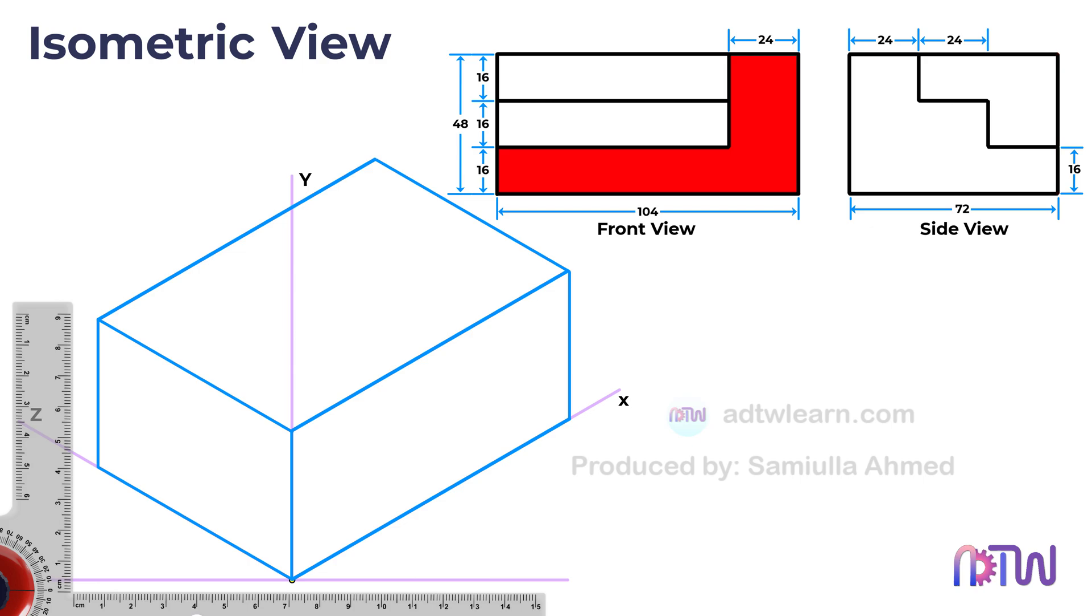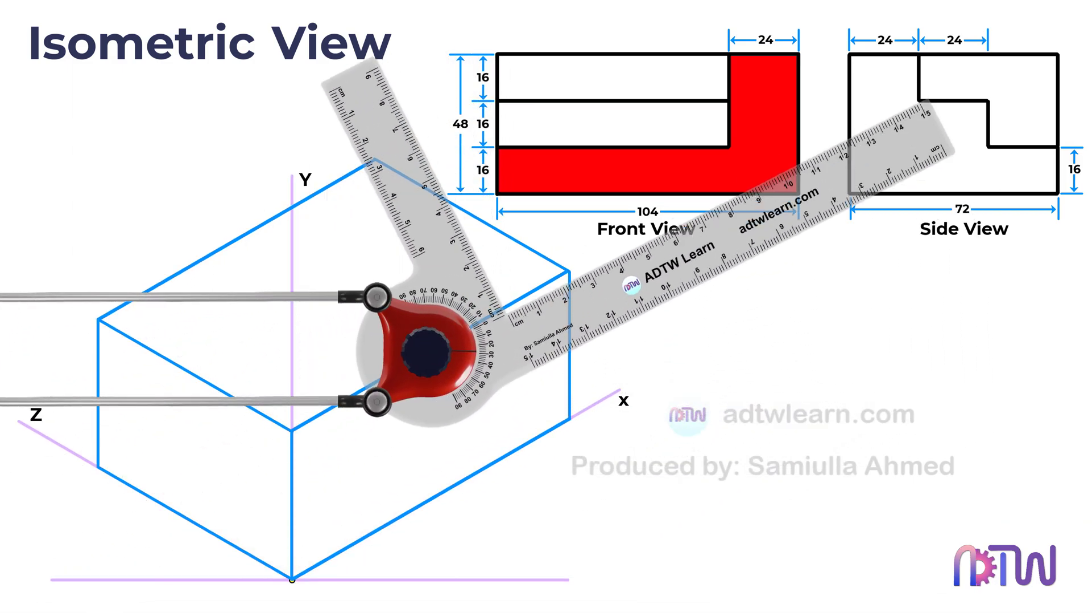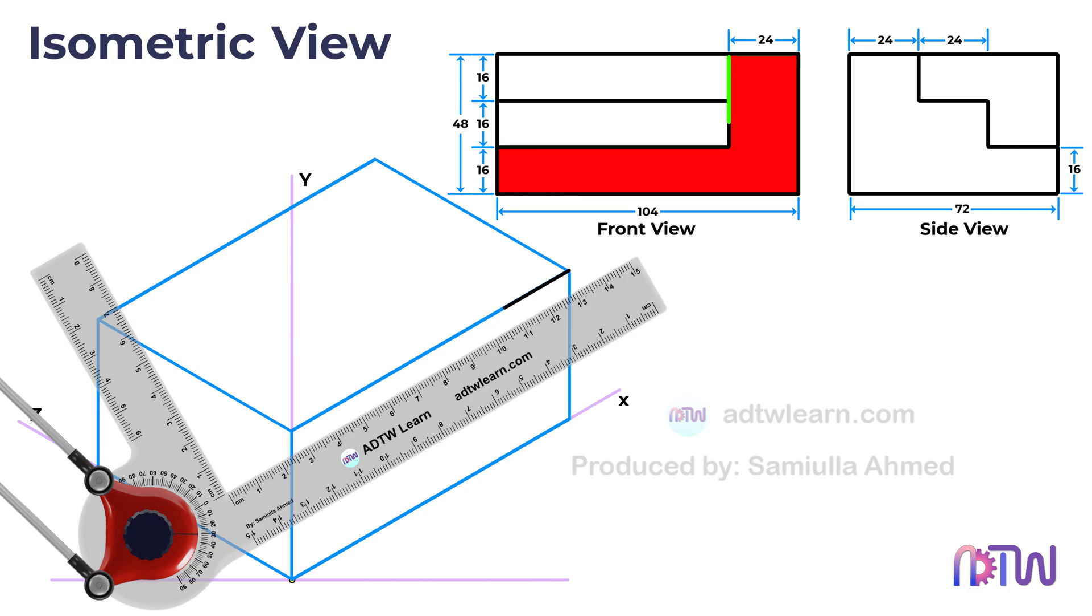Using a drafter, draw a 24 mm line parallel to the XY plane from this point. The length of the vertical line from this point is 32 mm, so draw a vertical line of 32 mm downwards from the previous line as shown.